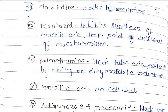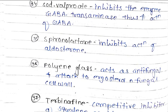Penicillin acts on the cell wall. Sulfinpyrazone and probenecid block uric acid reabsorption at the PCT. Sodium valproate inhibits the enzyme GABA transaminase, thus increasing the action of GABA. Spironolactone inhibits the action of aldosterone.